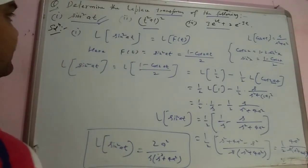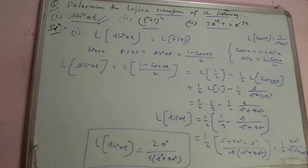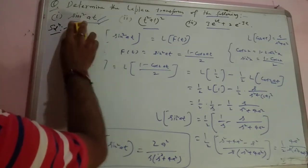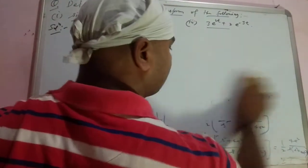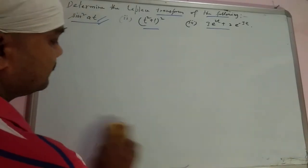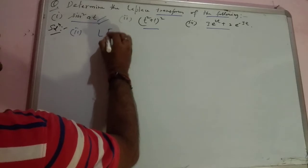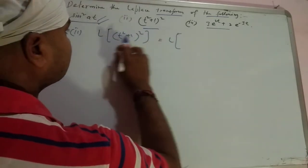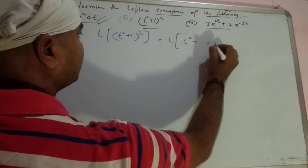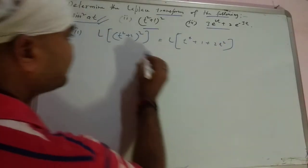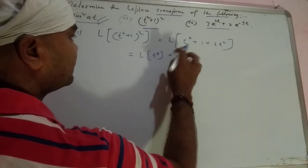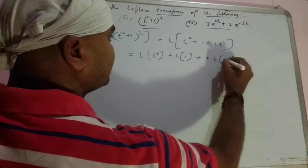Now let's go to the second question. We need the Laplace of (t square plus 1) whole square. First we expand it: t power 4 plus 1 plus 2t square, using the formula (a plus b) whole square equals a square plus b square plus 2ab. Then we apply the linearity property of Laplace transform.